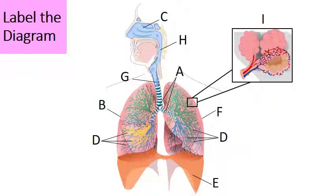Now that we've traced the path that air and oxygen travels through the respiratory system, pause the video and try to identify the parts that you see in the diagram. The answers will be given in three, two, one.